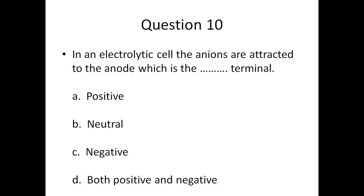Question ten: in an electrolytic cell, the anions are attracted to the anode, which is a dash terminal — A) positive, B) neutral, C) negative, or D) both positive and negative.